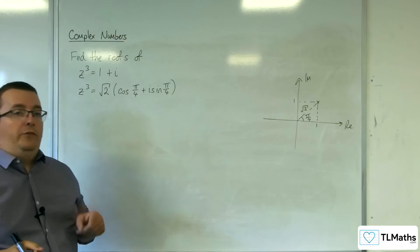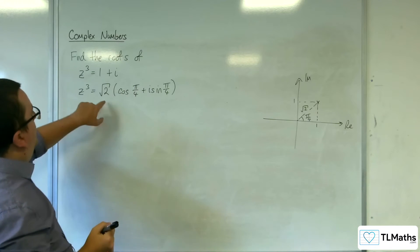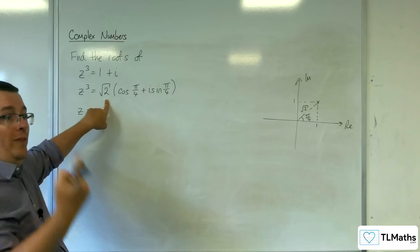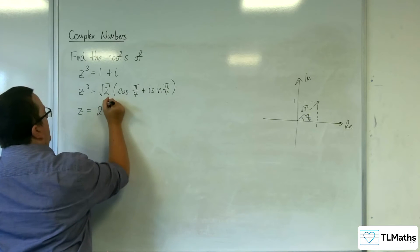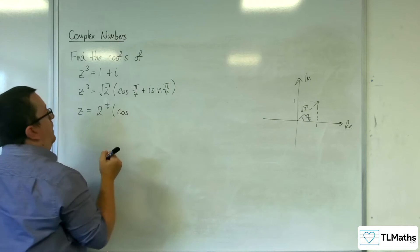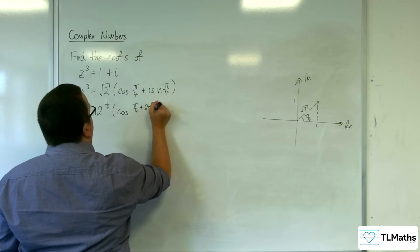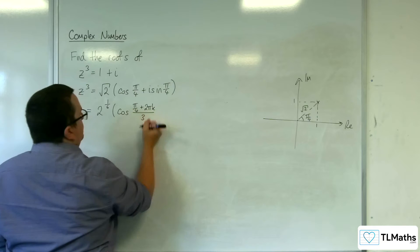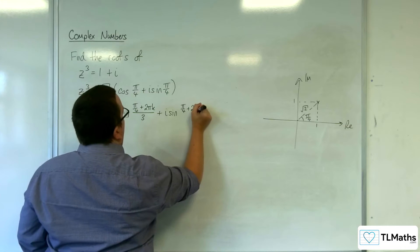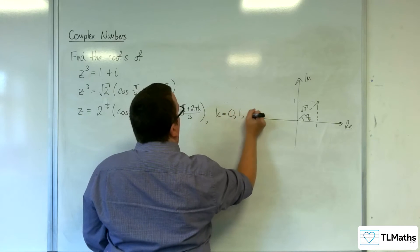So z is going to be equal to, we've got the root 2 and we want the cube root of that. Now that's 2 to the half, so the cube root of that is 2 to the power of 1 sixth. Then we're going to have cosine of pi over 4 plus 2 pi k over 3, plus i sine of pi over 4 plus 2 pi k over 3, where k is equal to 0, 1 or 2.